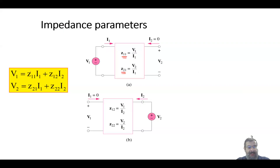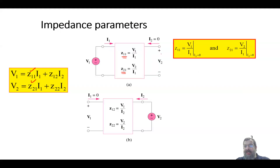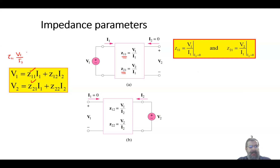To find z11 and z21, you apply a voltage v1 from the left side, measure v1 and i1, and make i2 = 0, meaning the right port is an open circuit. Hence z11 = v1/i1 when i2 = 0. Looking at the first equation, if i2 = 0, then z11 = v1/i1.